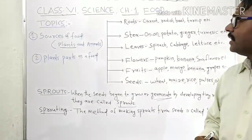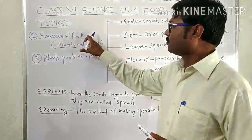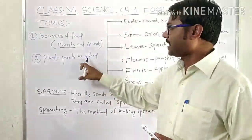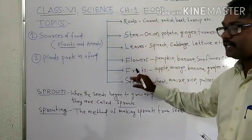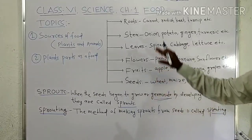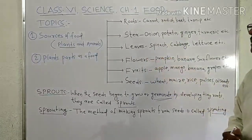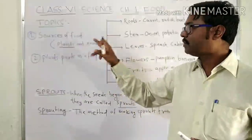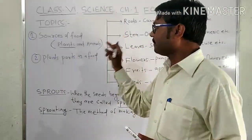So in this video we have discussed the sources of food, especially plant products — the parts of the plant from which we get our food. These six parts of the plant — root, stem, leaves, flower, fruits, and seeds — are where we get our food from. In the next video we will discuss animal products.